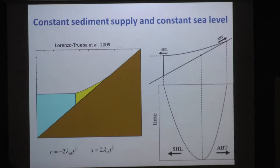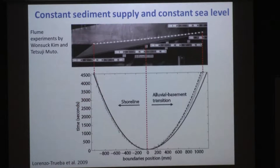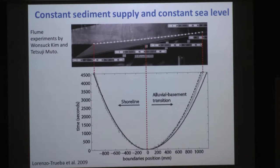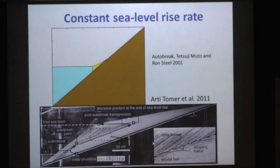This is a simple and straightforward solution that is easy to test. We can use flume experiments to check whether the simple model captures the dynamics of the alluvial-bedrock transition. These flume experiments were carried out by Wonsa Kim and Tetsuji Muto at Nagasaki University. The solid line shows the model result, with a 95% confidence interval, and the circles are data from the flume experiments. You can see that the model captures what is going on very well.